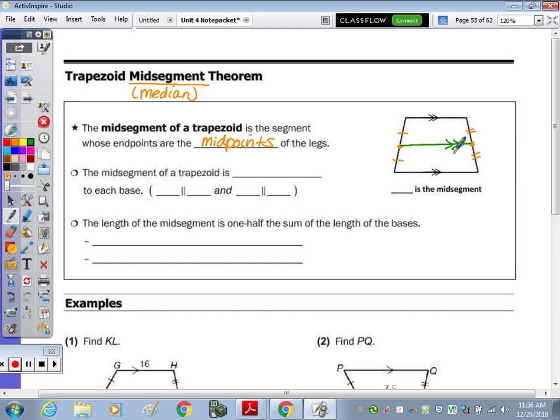The midsegment of a trapezoid is parallel to each base. So let's give it some vertices. Let's call this trapezoid A, B, C, D. And we'll call the midsegment X, Y.